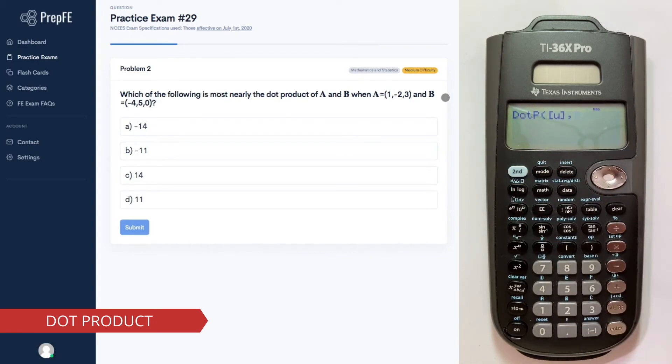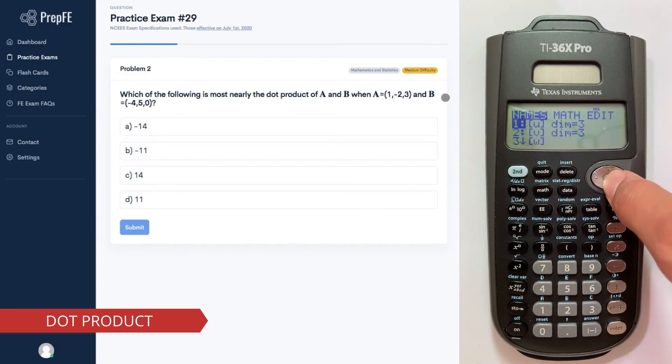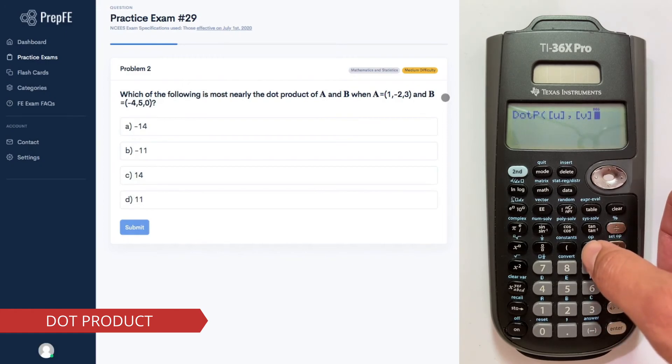Call back the second vector by doing Second, Vector, scroll down, select the second vector, hit Enter, close parentheses, then hit Enter again.